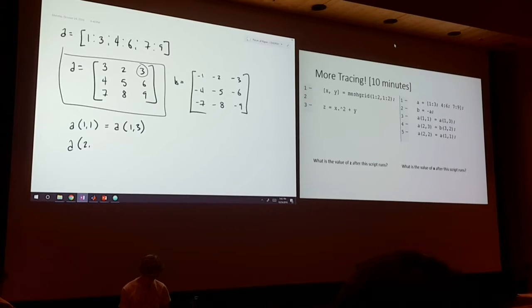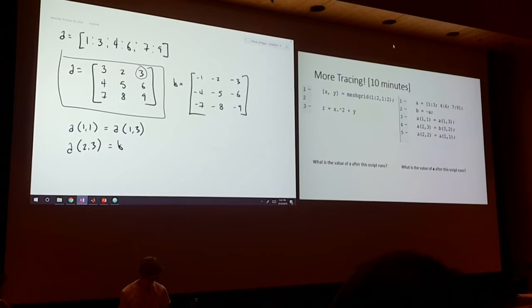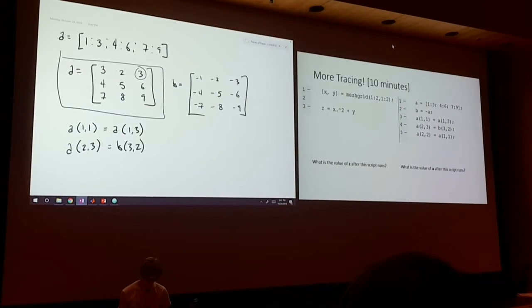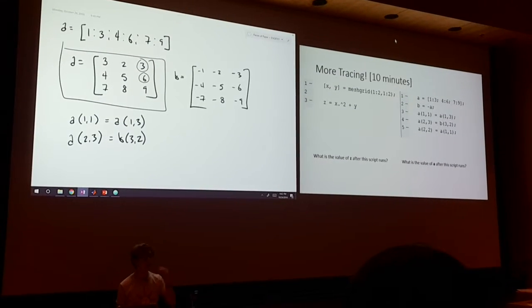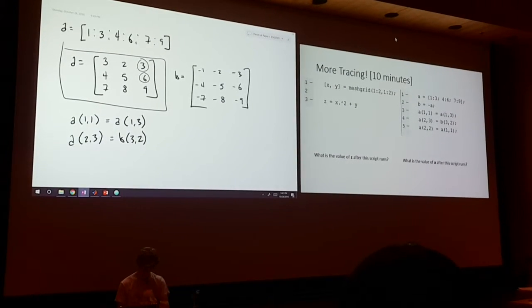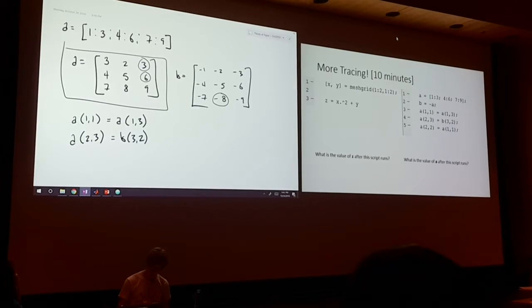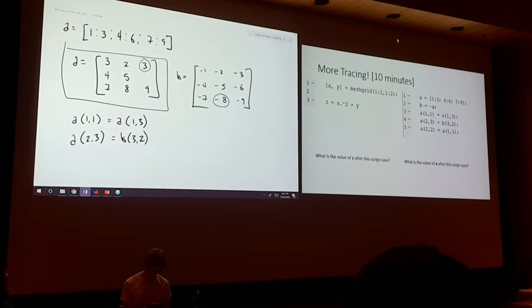Now, we have A of 2, 3 is equal to B of 3, 2. A of 2, 3 is this. B of 3, 2 is this, which means that this element now becomes negative 8.